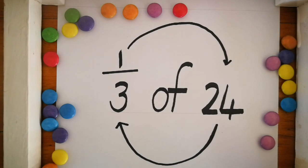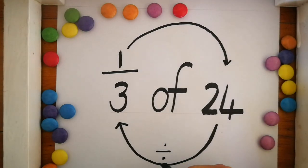We are going to take the whole number, 24, and divide it by the bottom number, the denominator, 3. When we get the answer, we will times it by the top number.